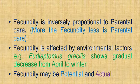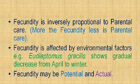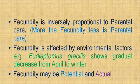Fecundity is of two types: potential and actual. Potential fecundity is the term used to define the maximum egg-laying capacity of the female under ideal conditions — what is the maximum capacity of that female when ideal conditions are maintained.